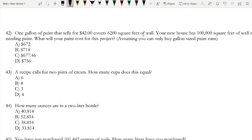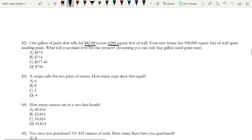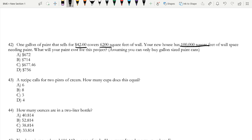One gallon of paint that sells for $42 covers 6,200 square feet of wall. Your new house has 100,000 square feet of wall space needing paint. What will your paint cost for this project be? I think they should have added that, assuming you can only buy gallon sized paint cans. Okay, so you do get a calculator for this test. I should probably take mine out because I think I will need it for this question.